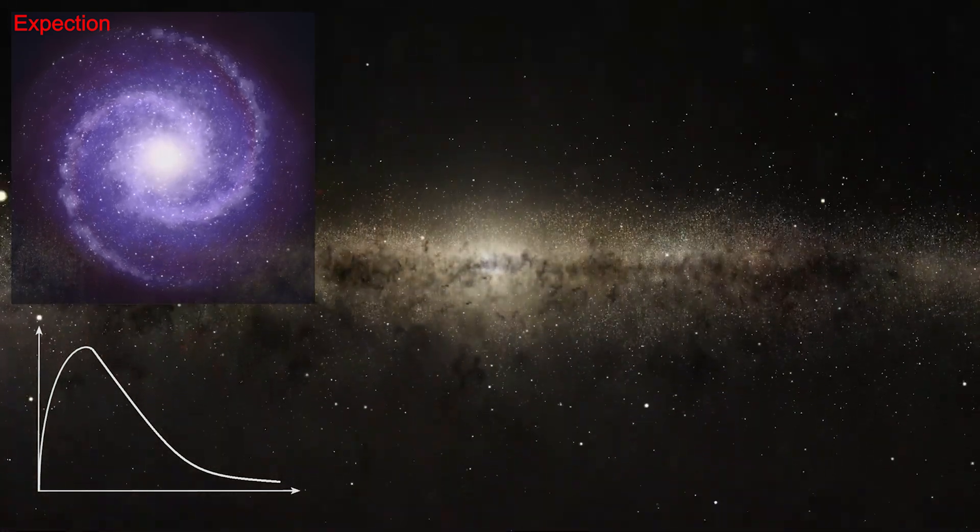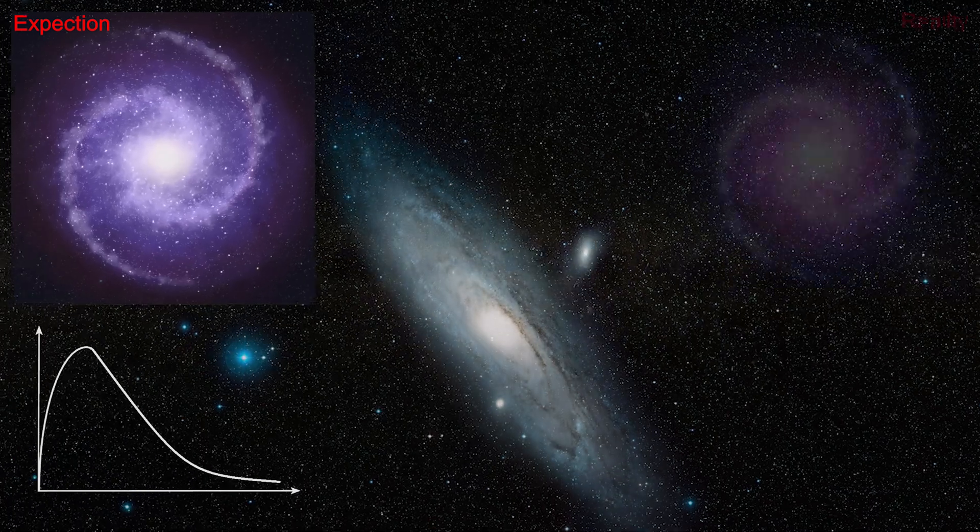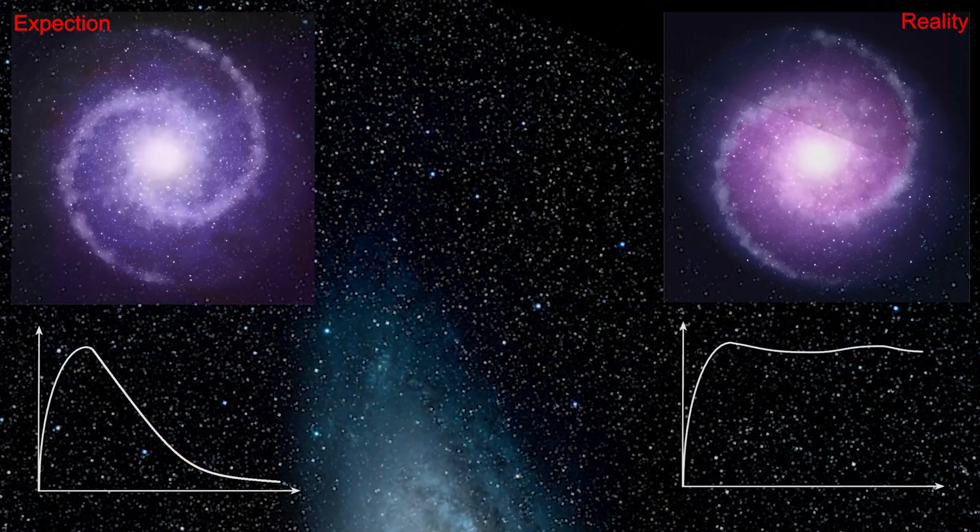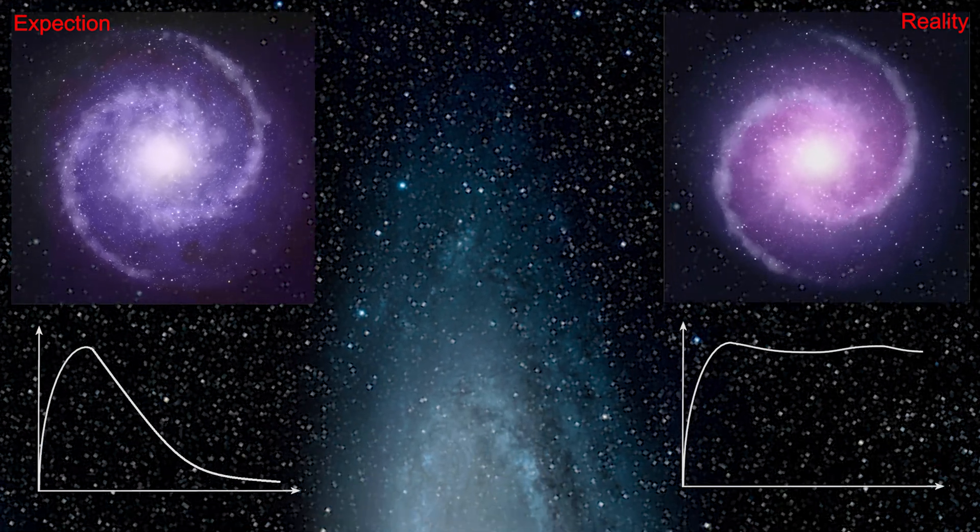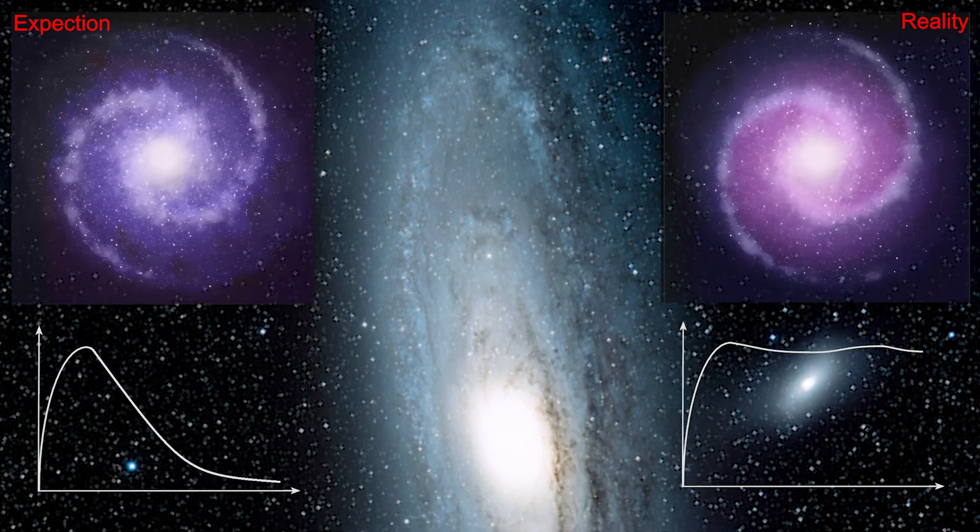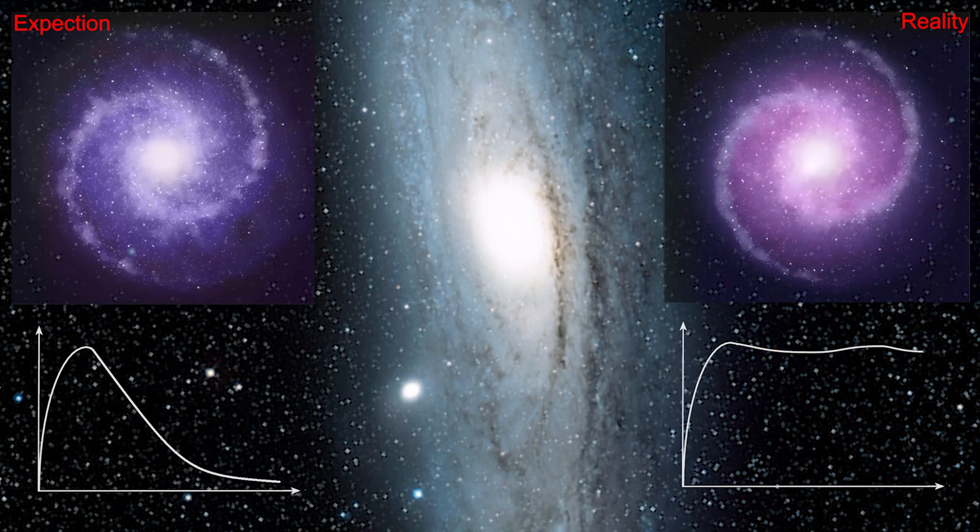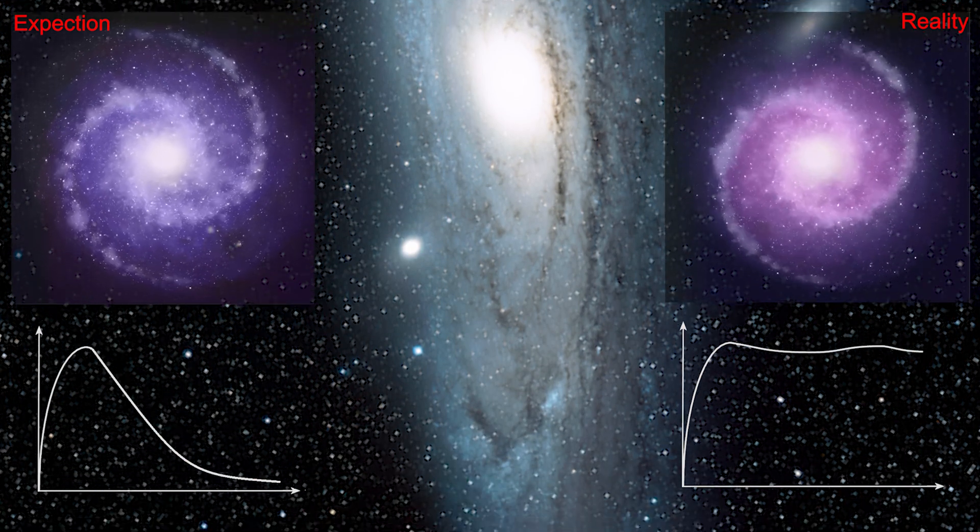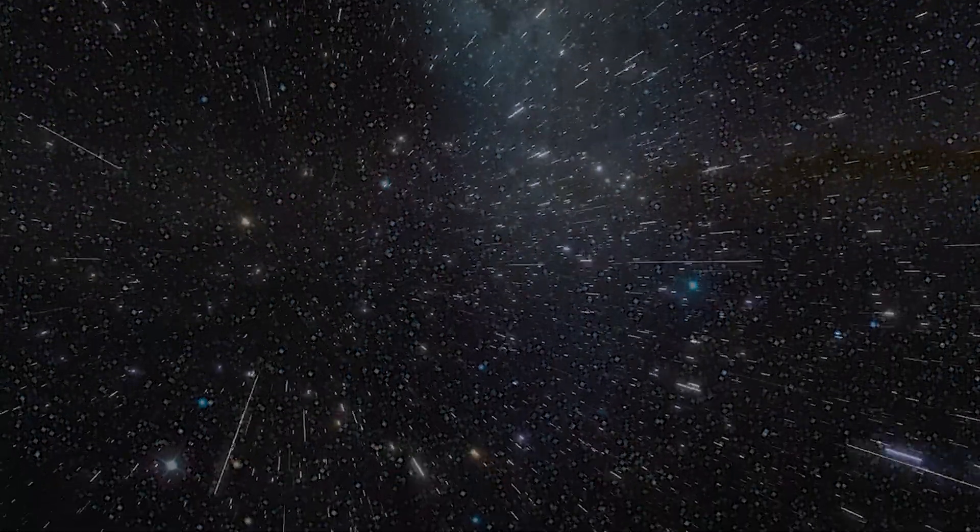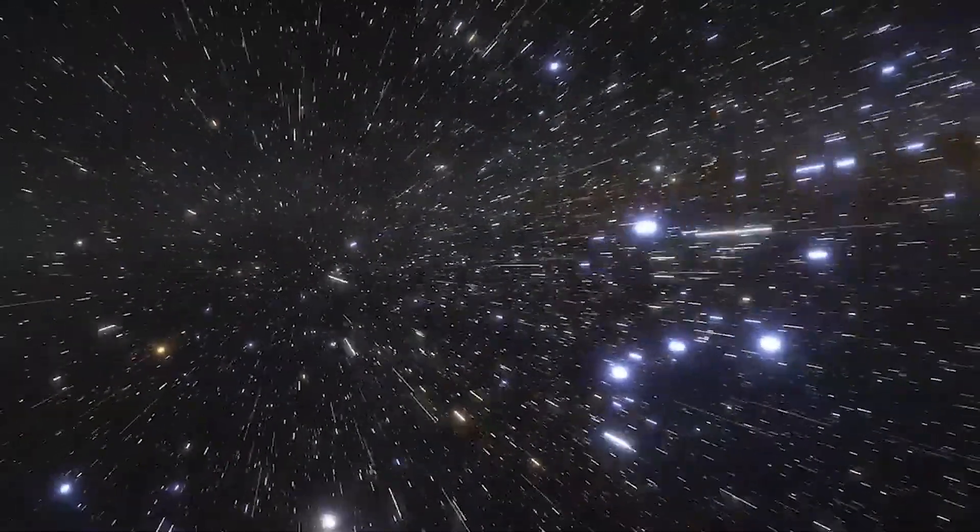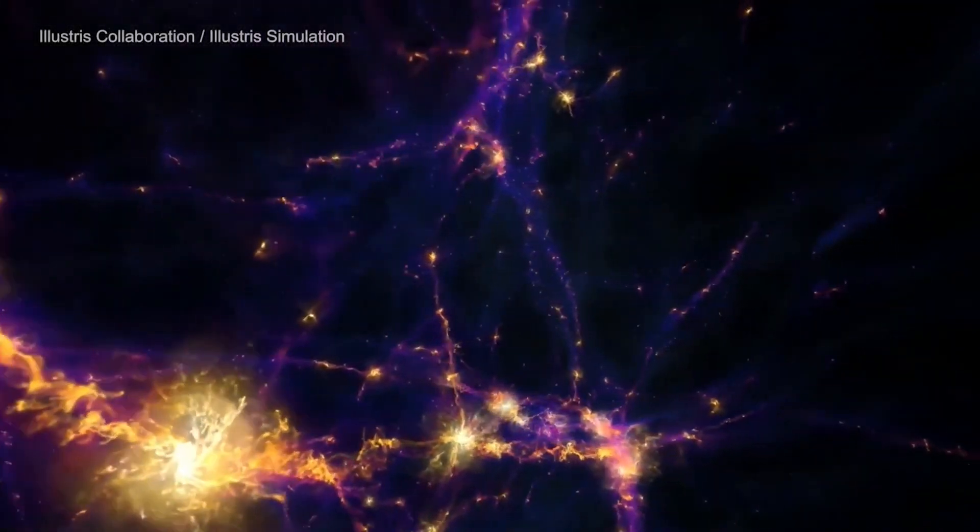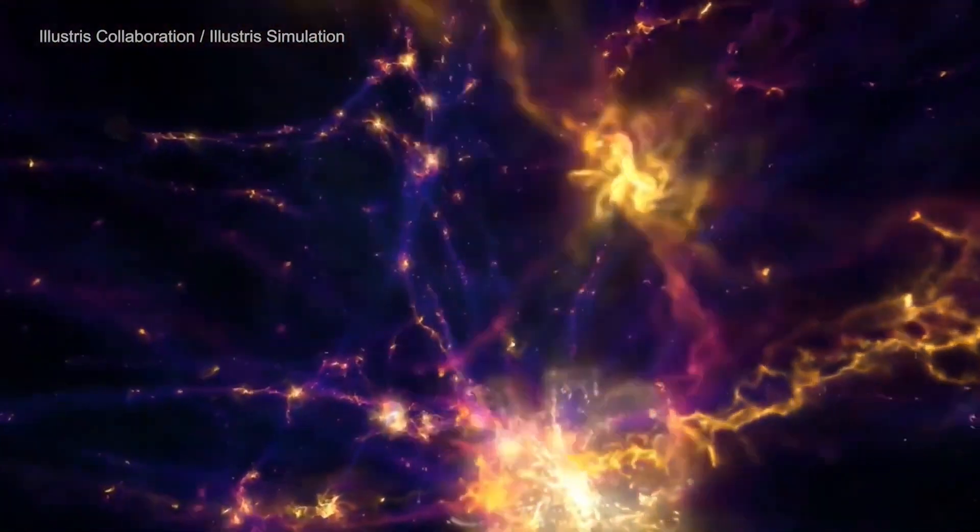But their observation was totally opposite. The stars were speeding up with the increasing distance from the core. This was very peculiar. There can be only one solution to this problem: we calculated the mass of these galaxies totally wrong. There must be a huge amount of invisible matter at the galactic center, which is responsible for this unusual speed of the stars at the outer edge of these galaxies. This invisible matter of concerning mass was named dark matter.